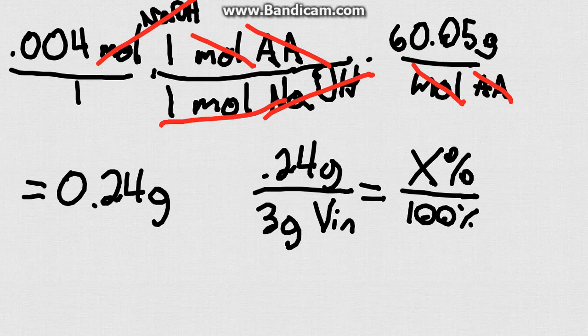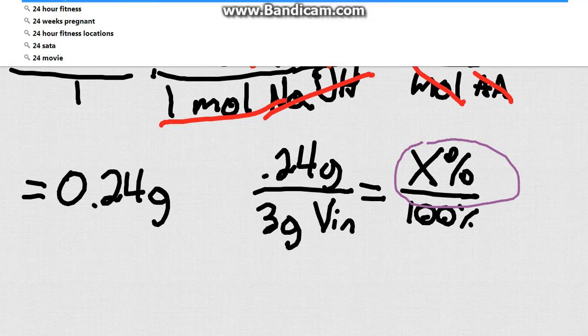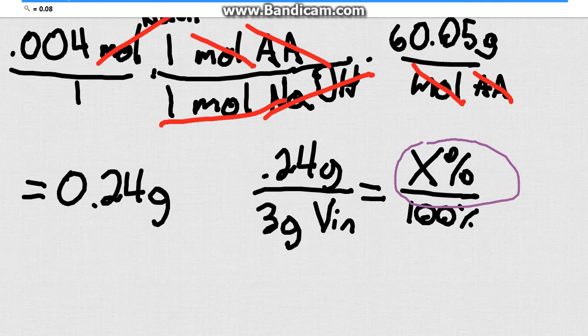We just basically have to multiply both sides by, depends how you set this up, if you want it in percent, if you want your x to be in percent, then you can multiply this other side by 100 and that'll give you your answer. So we've got 0.24 divided by 3. That's going to be 0.008. And then we can multiply that by 100. And we are going to get that x equals 8%.